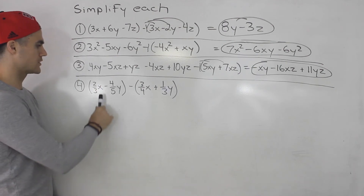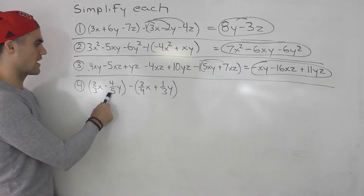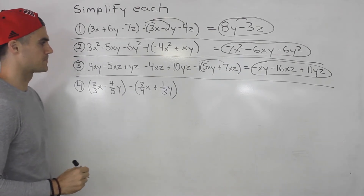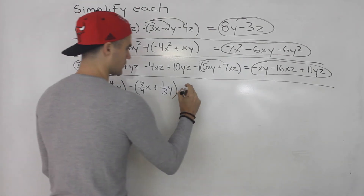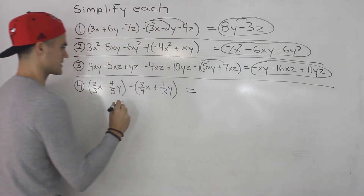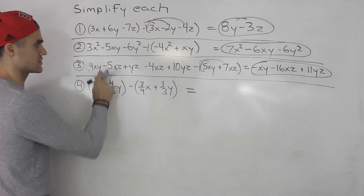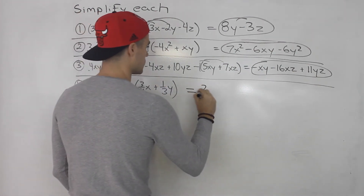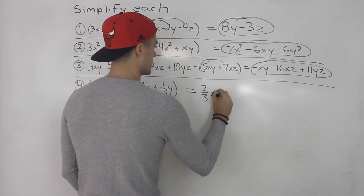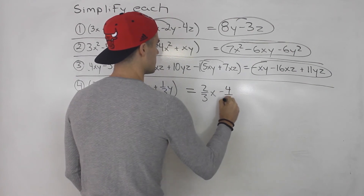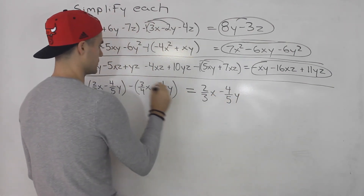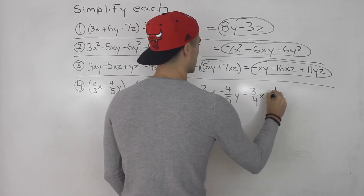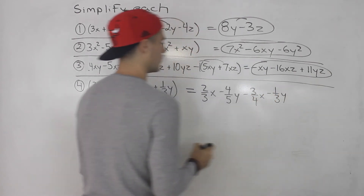Finally number 4: we got 2 over 3x minus 4 over 5y minus, in brackets, 3 over 4x plus 1 over 3y. We're dealing with fractions, but it's the same thing — you treat these fractions like you would any number in front. So rewrite 2 over 3x minus 4 over 5y, then distribute the negative inside to get negative 3 over 4x minus 1 over 3y.